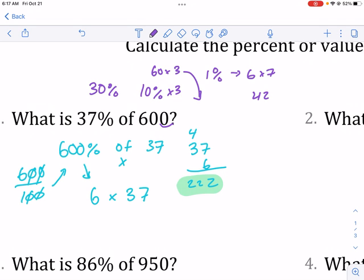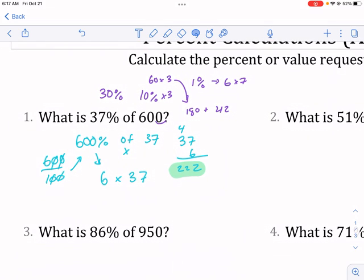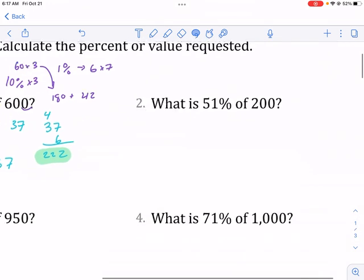So then I have 180 plus 42, which of course is 180 plus 42. And that gives you the same thing. So that's a different way to do it. I think converting it into a different percentage problem makes it a little bit easier.